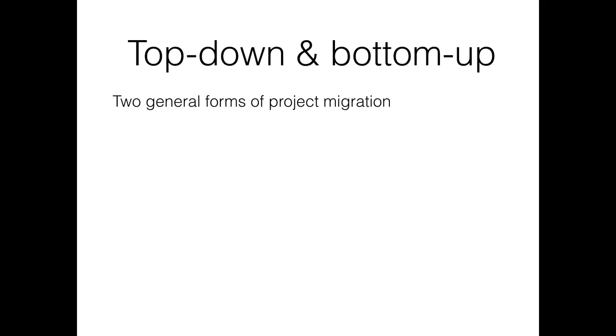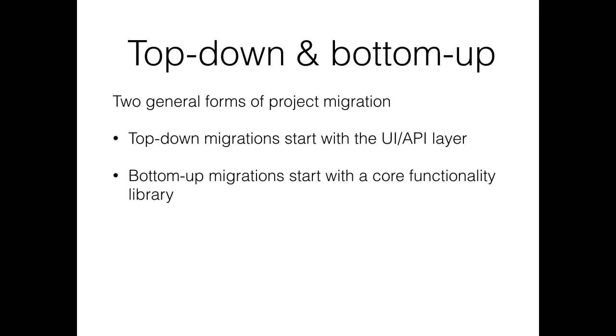Top down and bottom up migrations. The two general migration strategies. Top down migrations are what most of you will be doing. Start at a top layer. Top down migrations start with the UI or the API. Bottom up migrations start with a core functionality of your product. Normally this is a core library that it integrates. This could be a very low level networking library that you perhaps developed or used. It could be some critical feature that is used by all parts of your app. It could be a set of utility functions. It could be anything as long as it's commonly shared.